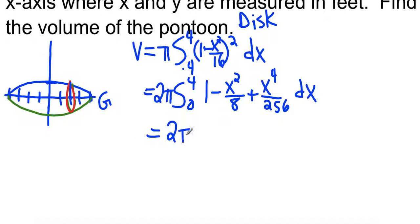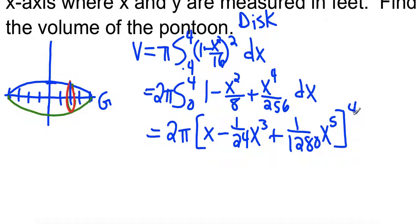So we're going to take the antiderivative. It's going to give us x minus 1/24 x cubed plus, it's going to be a big number, 256 times 5. Is that 1280? Let's hope so. 1/1280 x to the 5th. And we are going to evaluate from 0 to 4.